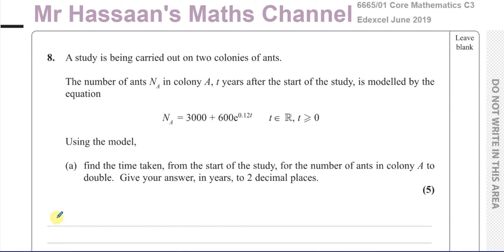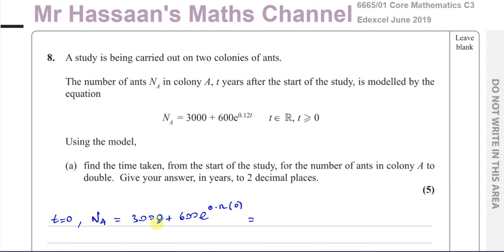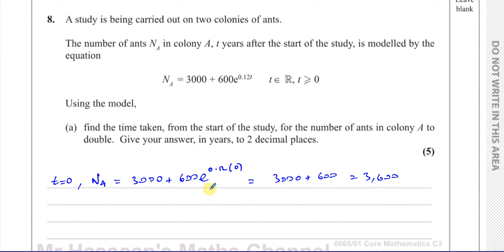We want to find the time it takes for this to become twice as much as it was before. So let's find out what the number of ants was when time equals 0 at the beginning of the study. When time equals 0, the number of ants is 3000 plus 600 times e to the power of 0.12 times 0. This gives 3000 plus e to the power of 0, which is 1, so it's 3000 plus 600, which is 3600. That's the number of ants at the start of the study.